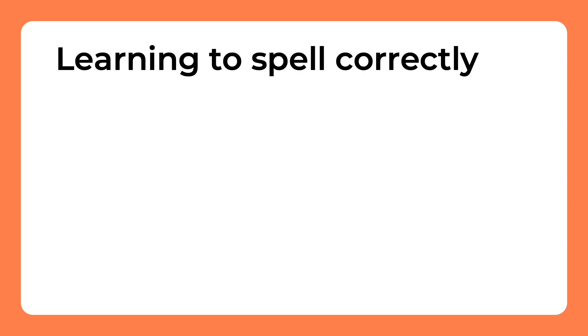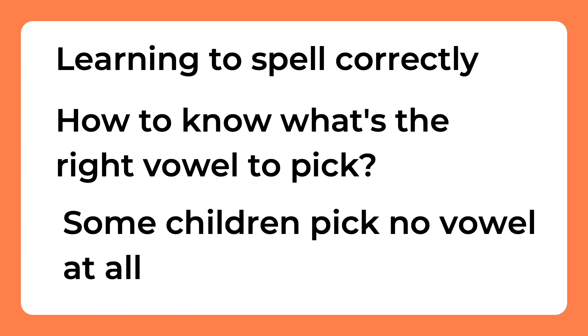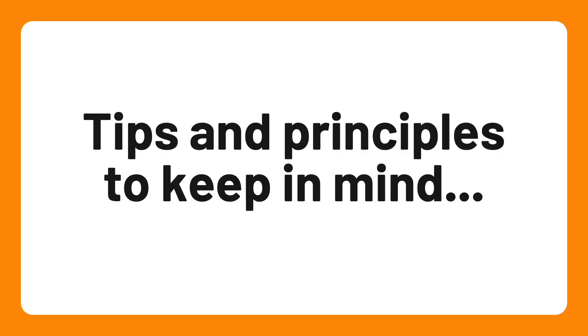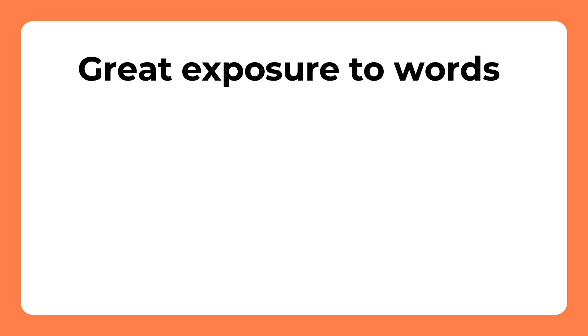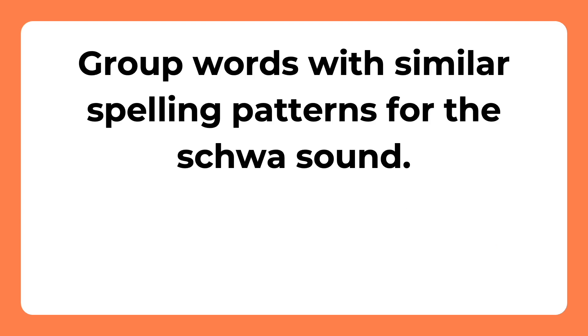When does this become relevant? When children are learning to spell correctly. The schwa sound really complicates things in English spelling — how to know what is the right vowel to pick? Some children pick no vowel at all. The main tips and principles to keep in mind: great exposure to words, achieved by reading and seeing the same words over and over, to develop a natural instinct for what looks correct. Make sure your child understands the difference between stressed and unstressed syllables. Group words with similar spelling patterns for the schwa sound and teach them at the same time — for instance, there is a family of words that start with the schwa sound spelled with the letter A.